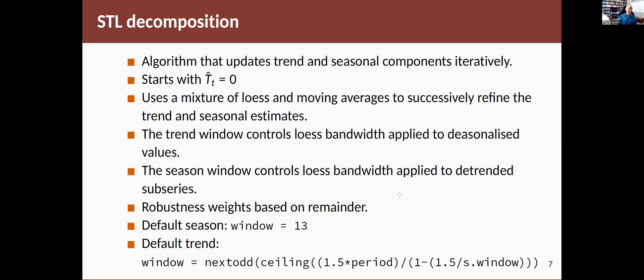And if you say robust, then it's taking the remainder series and it's looking to see how extreme they are. So if it's more than a few standard deviations from zero, then it's going to downweight those values.